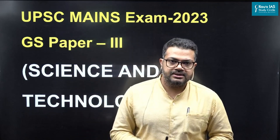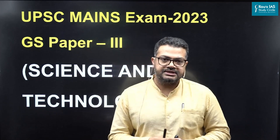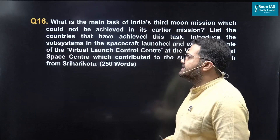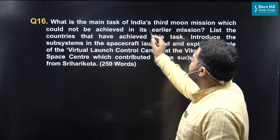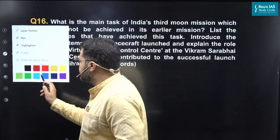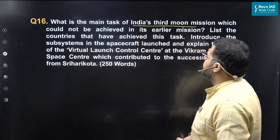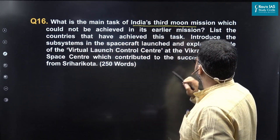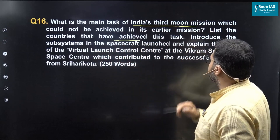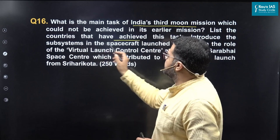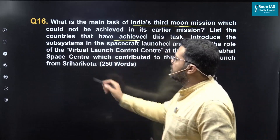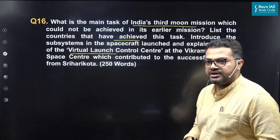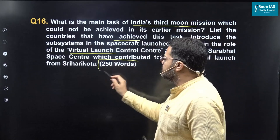Hello students, let us look at another question of science and technology that was asked in this year's UPSC mains exam on paper 3. The question I am taking here is question number 16: What is the main task of India's third moon mission, in reference to Chandrayaan-3, which could not be achieved in its earlier missions? List the countries that have achieved this particular task, introduce the subsystems in the spacecraft launched, and explain the role of the virtual launch control center at the Vikram Sarabhai Space Center which contributed to the successful launch from Sriharikota. This answer has to be written in 250 words.